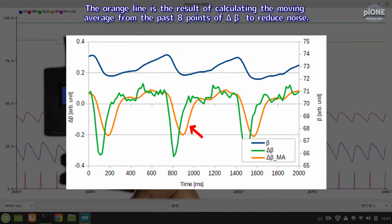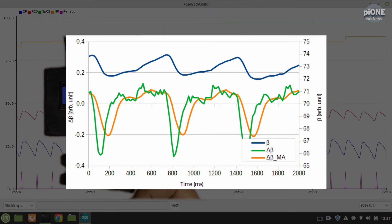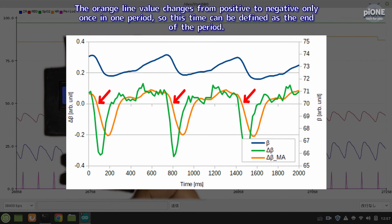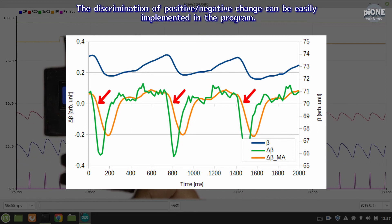The orange line is the result of calculating the moving average from the past eight points of delta-beta to reduce noise. The orange line value changes from positive to negative only once in one period, so this time can be defined as the end of the period. The discrimination of positive-slash-negative change can be easily implemented in the program.